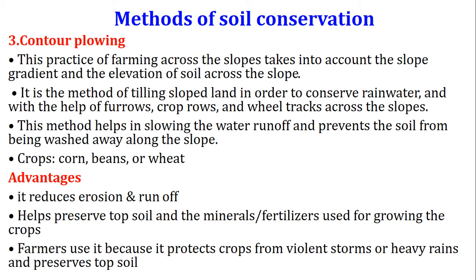The third method is contour plowing. This practice of farming across slopes takes into account the slope gradient and elevation of soil. It is a method of tilling sloped land to conserve rainwater, using furrows, crop rows and wheel tracks across the slopes. This method helps slow water runoff and prevents soil from being washed away. Crops suitable for this method include corn, beans, and wheat. Advantages include reduced erosion and runoff, preservation of topsoil and minerals, and protection of fertilizers used for growing crops.